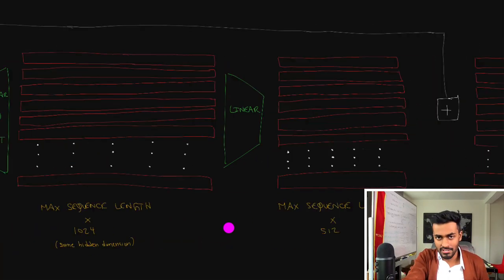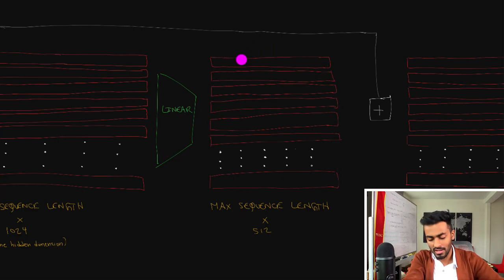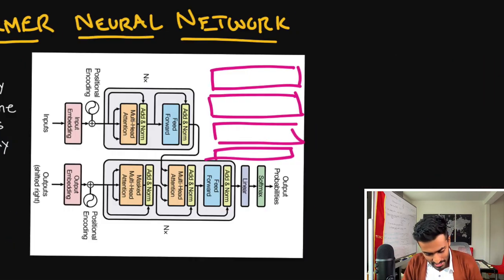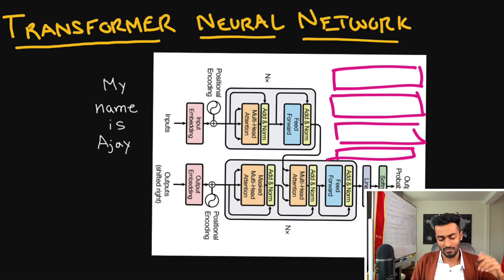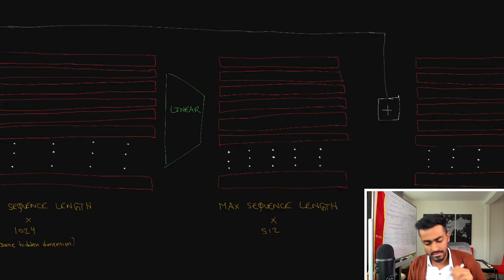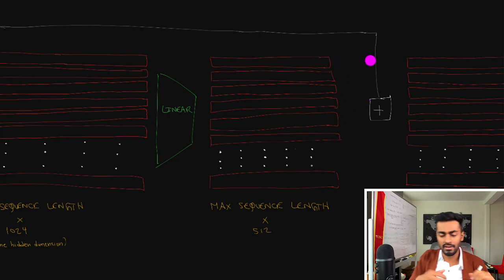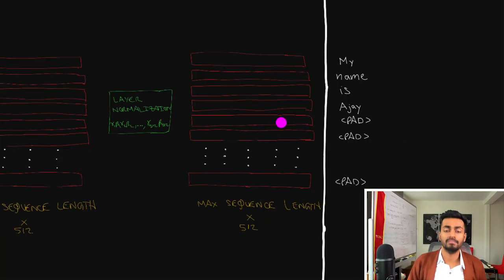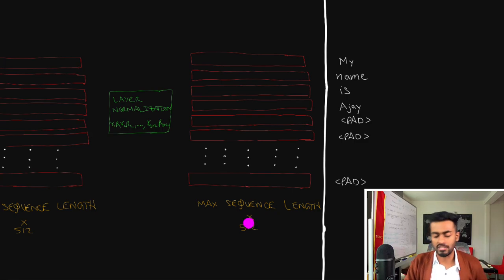We then pass this into another linear layer that compresses it back to 512 dimensions. We again use a skip connection, adding the output of the feed-forward layers to what we had from the previous add-and-norm step. Then we perform layer normalization again to further stabilize values, ending up with max_sequence_length × 512 dimensions — one 512-dimensional vector per word.